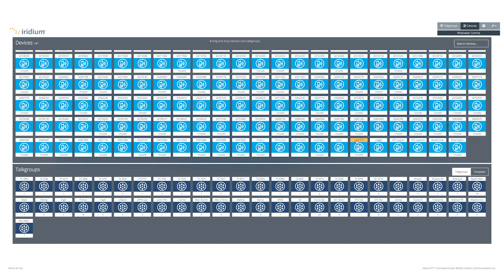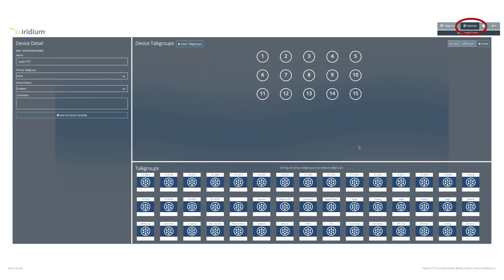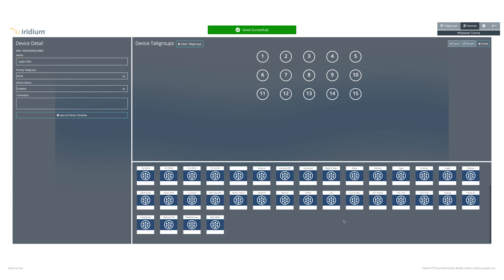To name your devices, click on the device on the devices tab. On the left-hand side of the screen you will see a field to enter the name. Once you've entered the name, click on save. In the same window you can add up to 15 talk groups to your device.